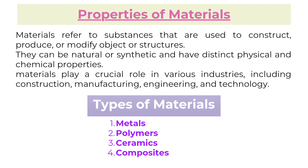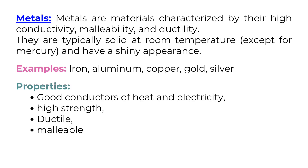Types of materials: Metals, Polymers, Ceramics, and Composites. Metals are materials characterized by their high conductivity, malleability, and ductility. They are typically solid at room temperature, except for mercury, and have a shiny appearance.